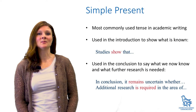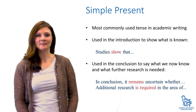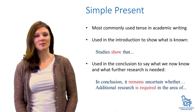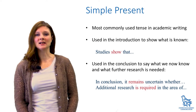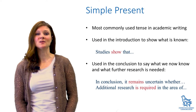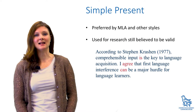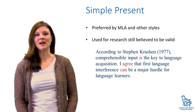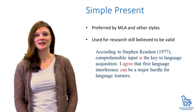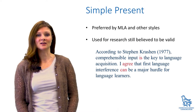The simple present is the most commonly used tense in academic writing. It's used to frame a piece of writing — we use it in the introduction to say what is already known about the topic, and in the conclusion to say what we now know about the topic and what further research may still be required. The present tense is preferred in MLA and some other styles to show the opinions and claims of other writers that are still believed to be valid, and to show your support or lack of support for the position of other writers.